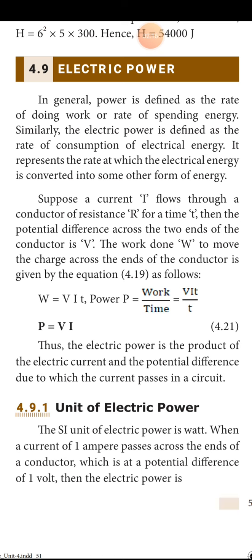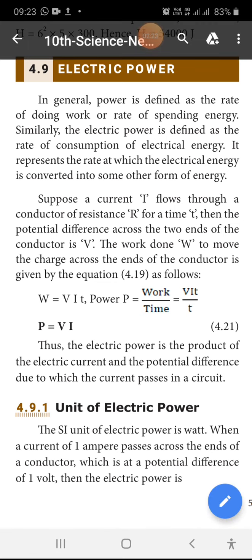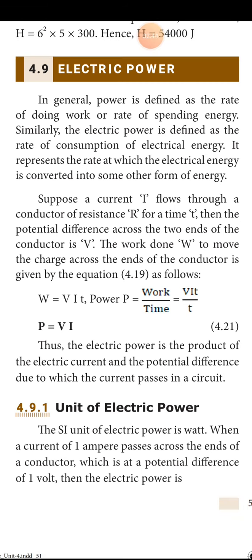As I said, power is equal to VI — V and I. Suppose the current I flowing through a conductor of resistance R for a time T, then the potential difference across the two ends of the conductor is V. The work done W to move the charges across the ends of the conductor is given by the equation: W is equal to VIT. So power is equal to W by T. Substituting W as VIT divided by T, T and T get cancelled, you will get P is equal to VI.